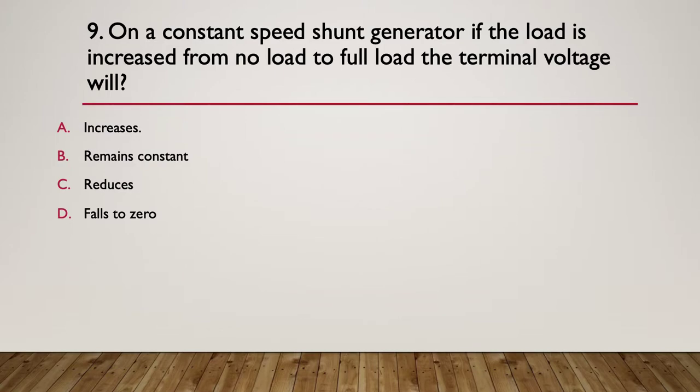Question nine. On a constant speed shunt generator, if the load is increased from no load to full load, what will the terminal voltage be or what will it do? How will it respond? So on a constant speed shunt generator, if the load is increased from no load to full load, the terminal voltage will A. increase, B. remain constant, C. reduce, or D. fall to zero.